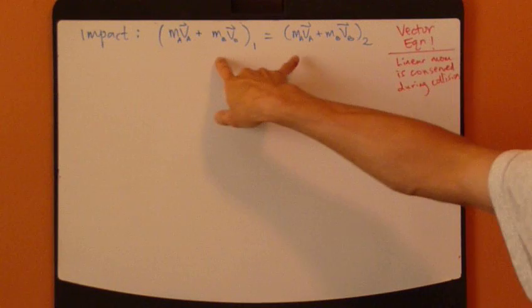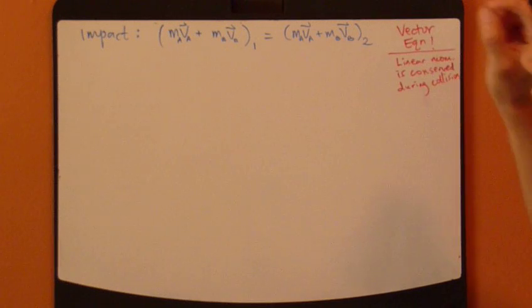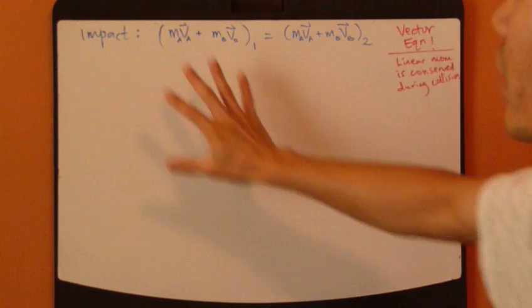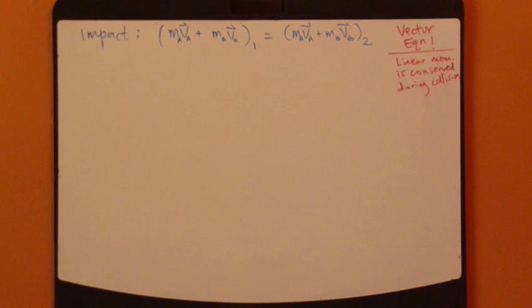Now, this actually means that linear momentum is conserved throughout the collision process. So the total linear momentum before equals total linear momentum after. So this is called the conservation of the linear momentum.